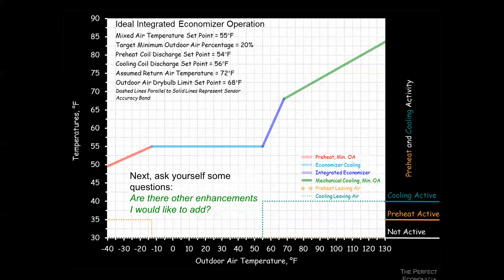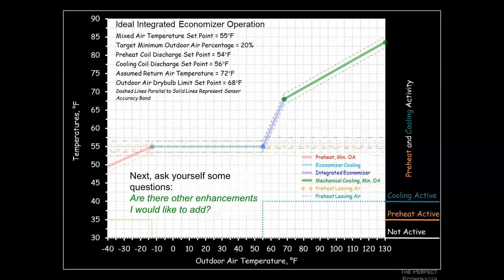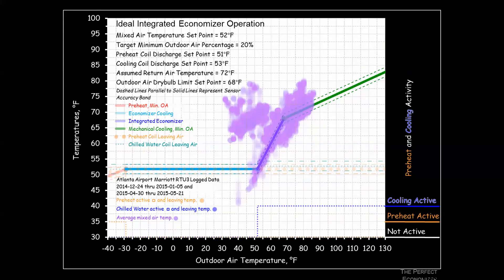Understanding that dry bulb temperature sensors have inherent inaccuracy, we add dashed lines to show the tolerance band around the perfect economizer profile. Now, plotting actual performance data against this ideal profile lets us quickly assess the health of our actual economizer.